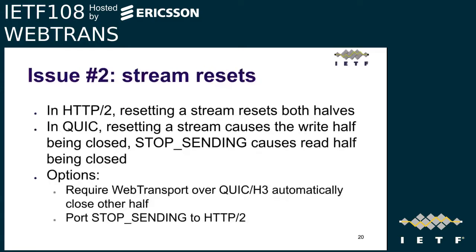The second issue is inconsistent stream reset semantics. Unifying semantics across QUIC and HTTP2 is difficult because QUIC allows resetting the write half and asking a peer to reset its write half, but not closing both halves yourself — whereas this is how TCP and HTTP2 stream termination works. Two options are: make everything like HTTP2 as the lowest common denominator, or extend the Web Transport over HTTP2 draft to introduce a stop-sending mechanism, which adds significant complexity.